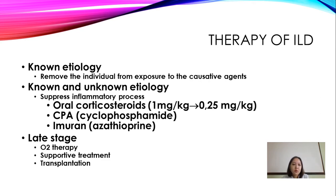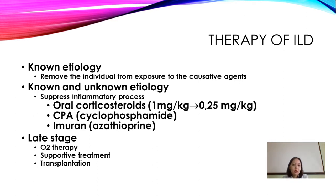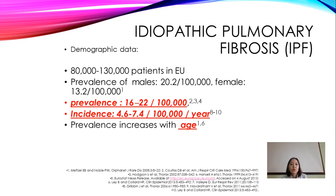For therapy, first you must know the etiology and remove the individual from exposure to the causative agent, whether the etiology is known or unknown. We use anti-inflammatory agents including oral corticosteroids, cyclophosphamide (CPA), and azathioprine (Imuran). At late stages we also use oxygen therapy, supportive treatment, and transplantation.